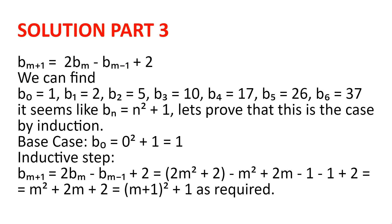Let's explore the first few terms of sequence b to get an idea and try to guess the general relation. We get b(0)=1, b(1)=2, b(2)=5 from previous working. So b(3) = 10-2+2 = 10, b(4) = 20-5+2 = 17, b(5) = 26, and b(6) = 37. This seems a lot like b(n) = n²+1.